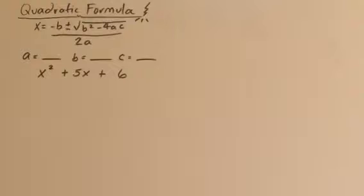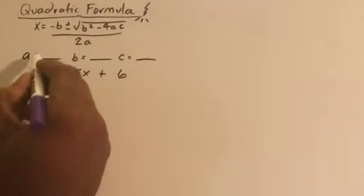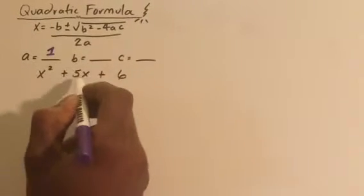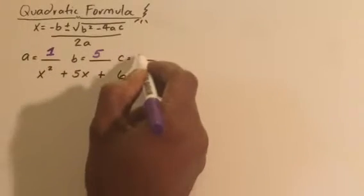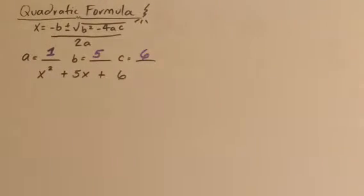The quadratic formula is a special formula because it uses only the coefficients of a quadratic. In fact, it uses only the a, b, and c values of a quadratic equation. Here, we have a equals 1, b equals 5, and c equals 6. These are the coefficients of the quadratic x squared plus 5x plus 6.